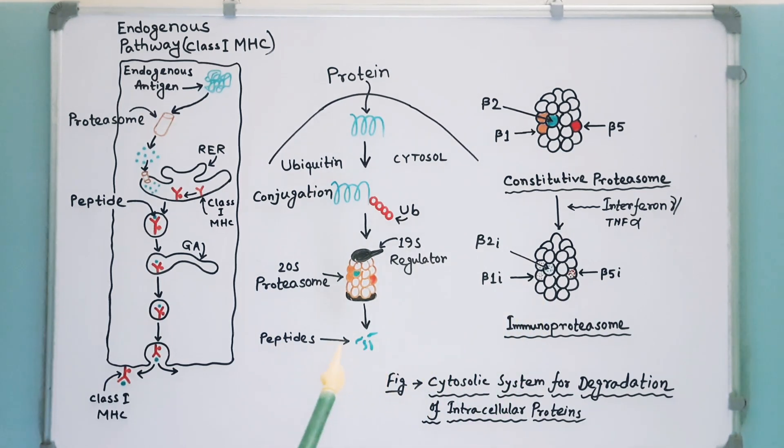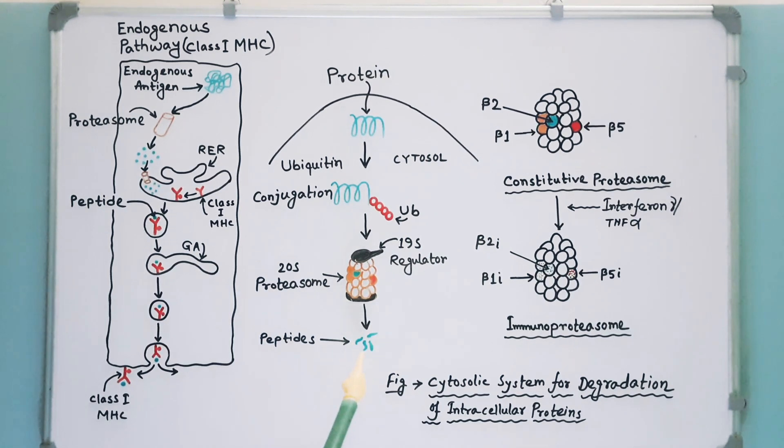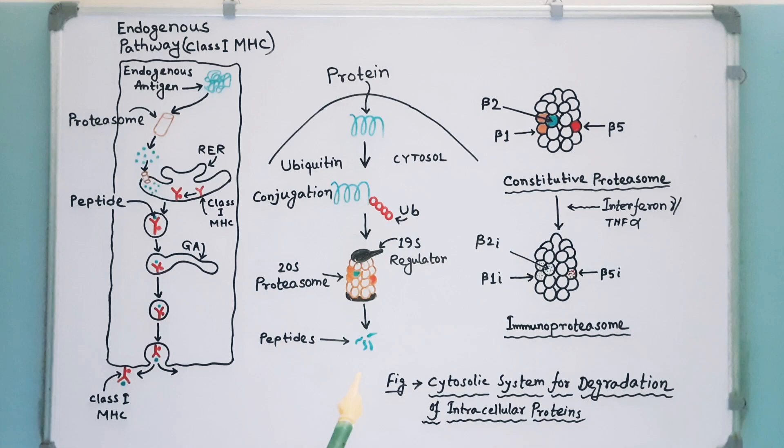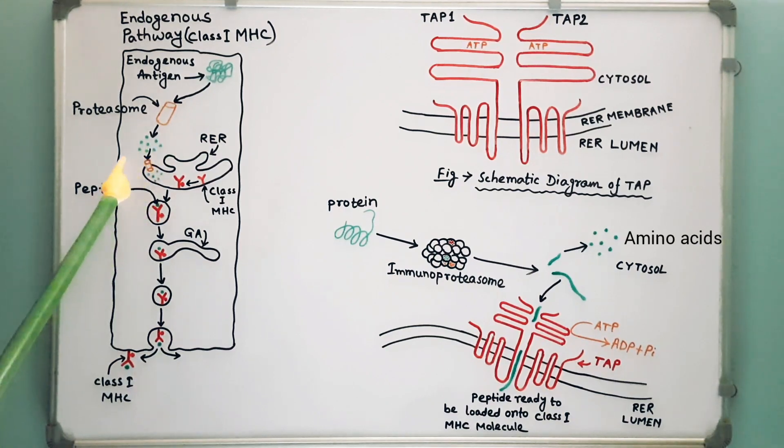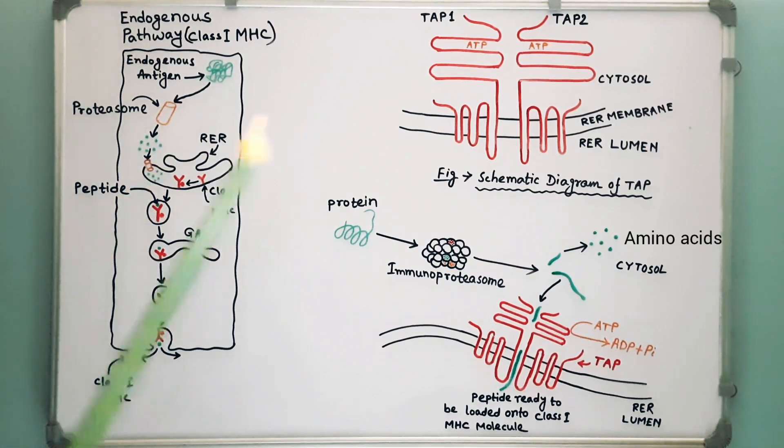So our peptides are ready for transportation from the cytosol to the rough endoplasmic reticulum. Now I will elaborate this step, how peptides enter the rough endoplasmic reticulum from cytosol.